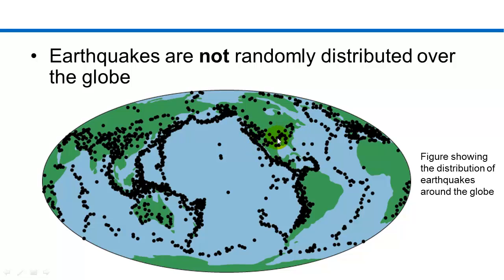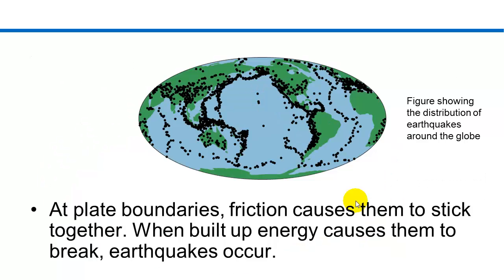And then some on the east coast as well. Going along the northern part of the map, we come down along China and Japan and the continent of Asia, and then back around the edge of this Pacific plate to Australia. At plate boundaries, friction causes the plates to stick together. When enough energy is built up and causes them to break, earthquakes can occur.